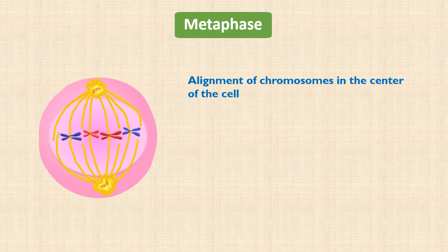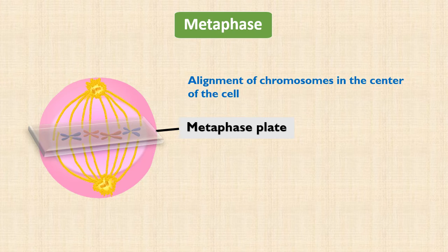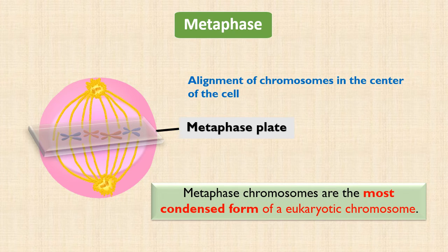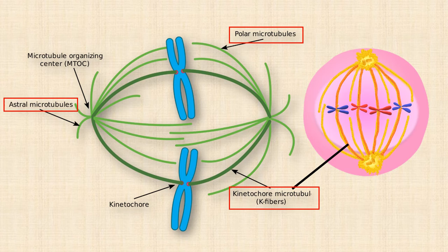As we said, the alignment of the chromosomes in the center of the cell marks metaphase. All the chromosomes move toward an imaginary equator halfway between the two opposite poles. This imaginary plane in the middle is known as the metaphase plate. Now, the sister chromatids of all the chromosomes are facing opposite poles. Metaphase chromosomes are the most condensed form of a eukaryotic chromosome. Therefore, metaphase is the best phase to count and study the number and morphology of chromosomes. As we studied in the previous video lecture, the microtubules of a metaphase cell can be divided into three groups: astral microtubules, interpolar microtubules, and kinetochore microtubules. Kinetochore microtubules connect the spindle poles with the kinetochores of sister chromatids and are required for the movement of chromosomes toward the pole during the next phase, anaphase.